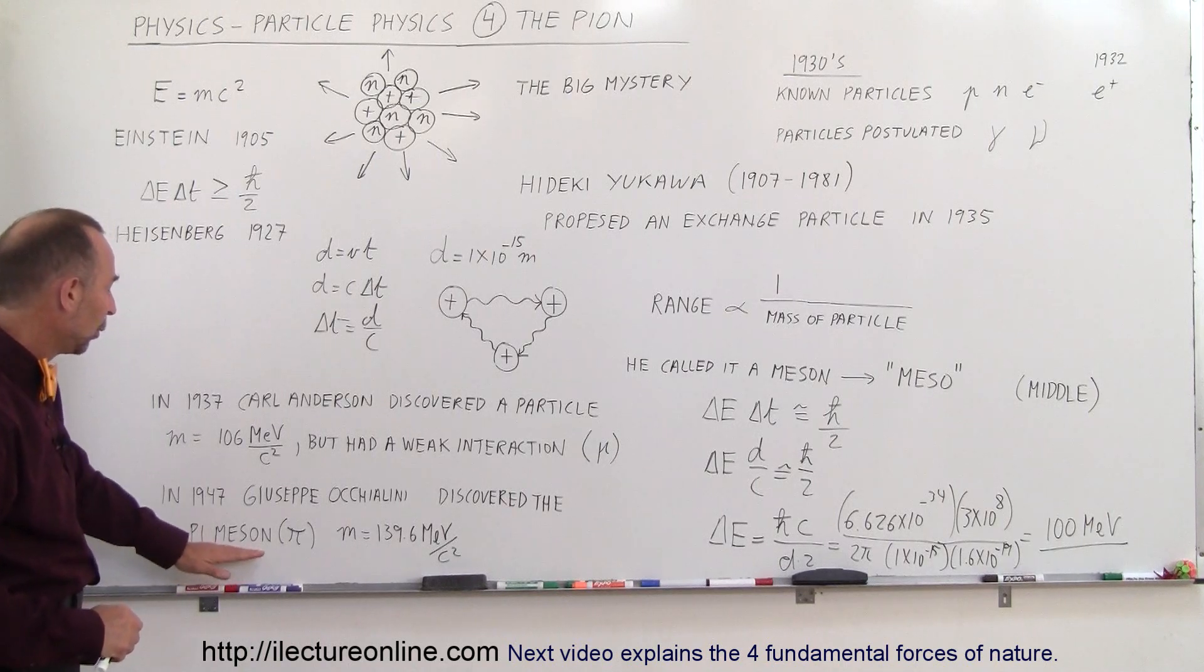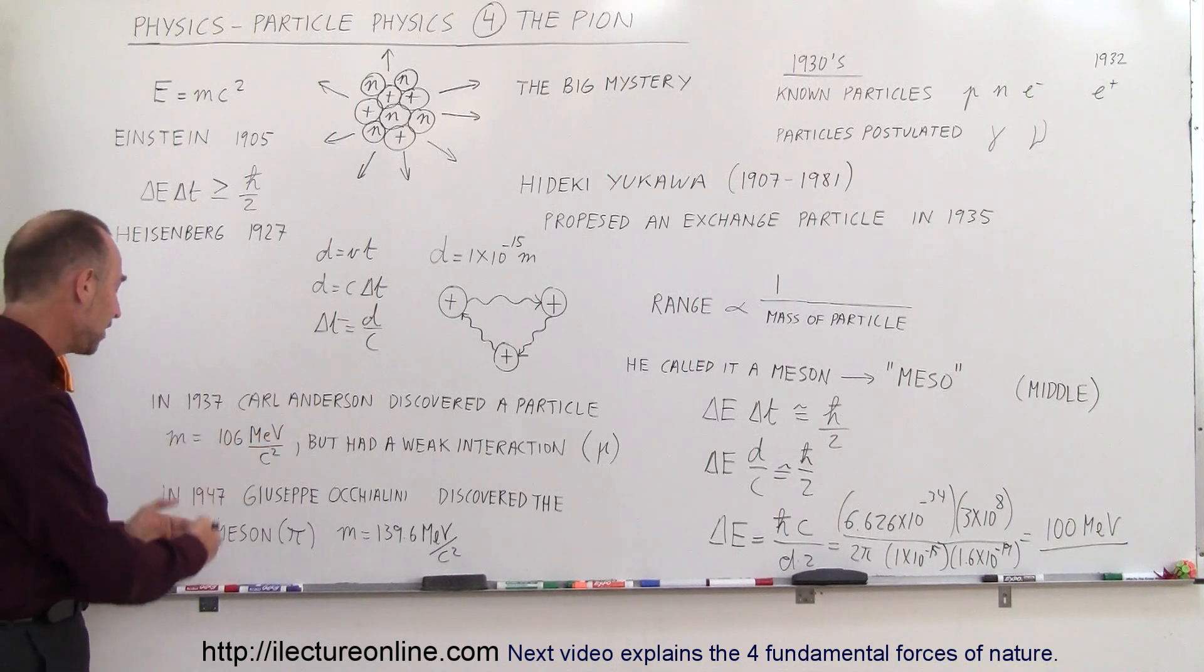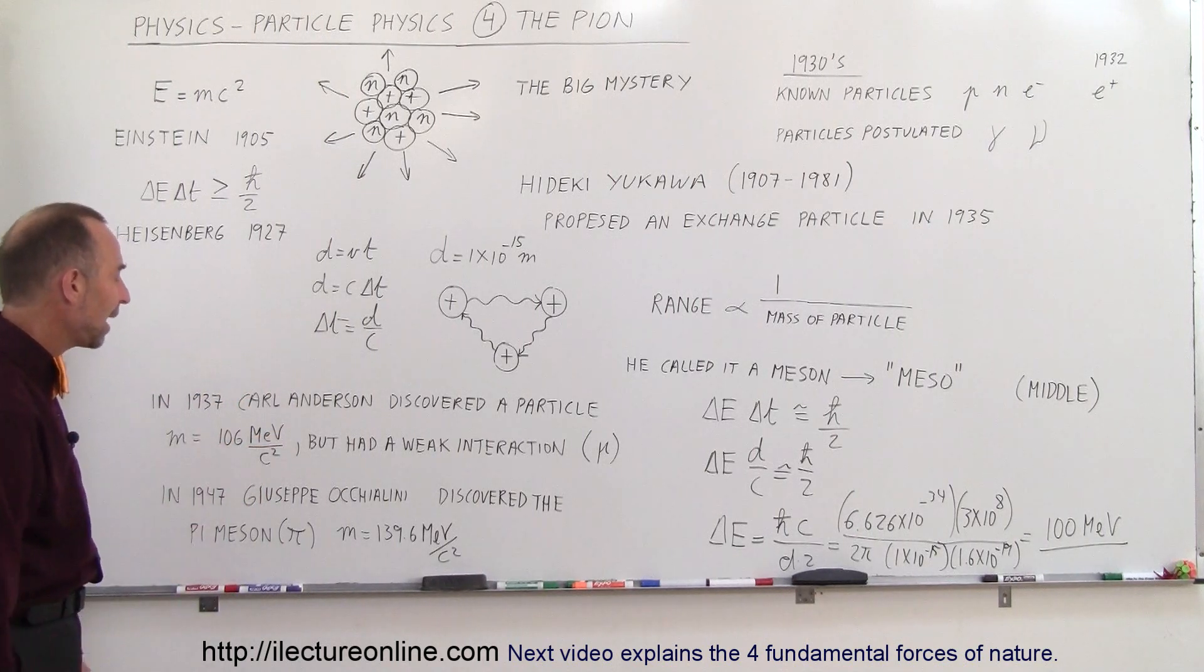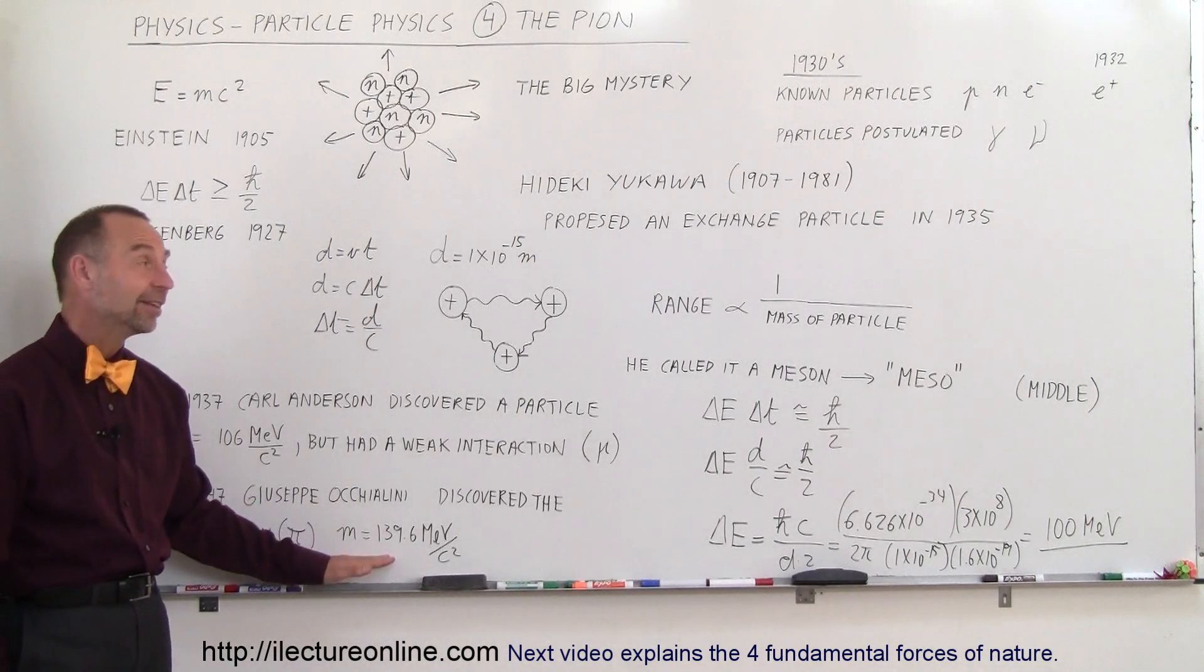And so this was then called the pi meson, the pi particle, or meson for middle sized particles, so all particles of this rough size are therefore called mesons, and this is therefore called the pi meson, using the letter pi to indicate the particle, and there it is, we found it.